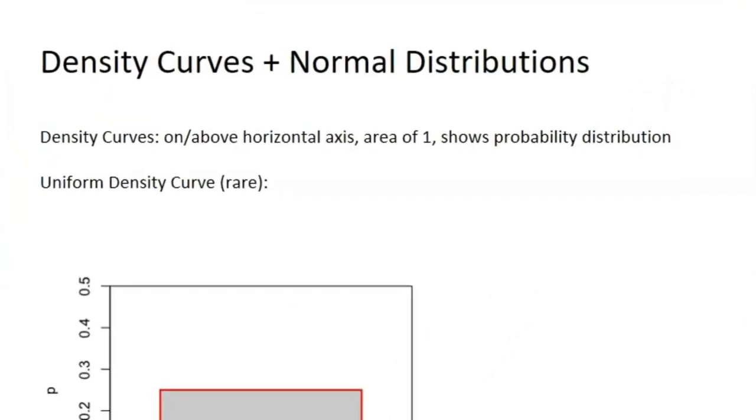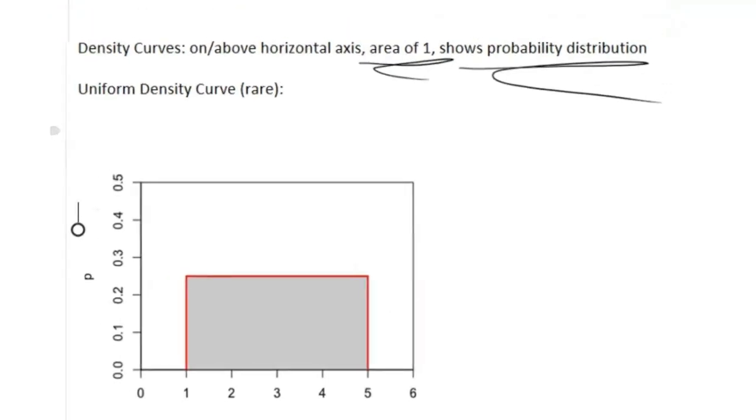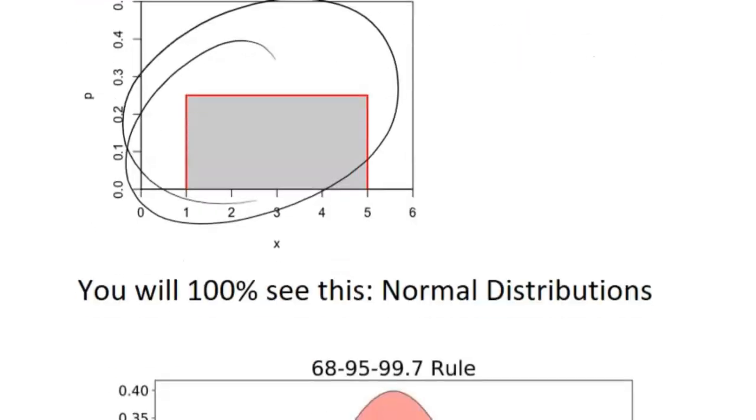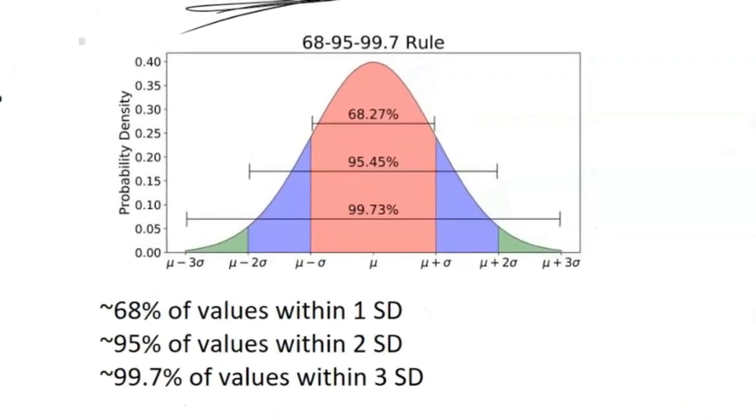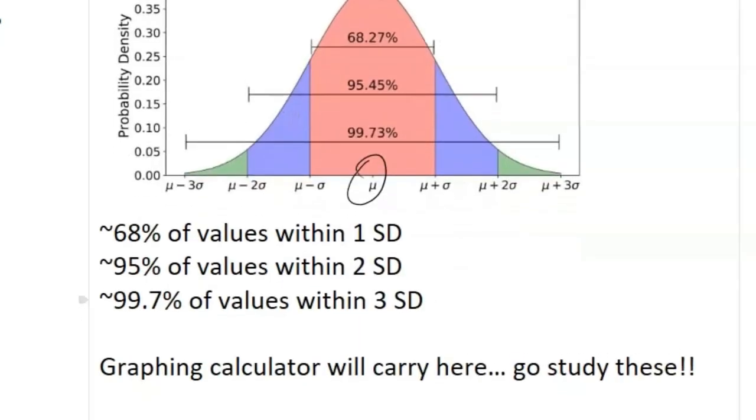Now let's talk about density curves and normal distribution. A density curve is on or above the horizontal axis, has an area of one, and shows probability distribution. Note that a normal distribution is a type of density curve. When you talk about a uniform density curve, it's quite rare - you might see questions on this - but you can see pretty clearly that it has a total area of one. The more common density curve you'll see is the normal distribution. You'll 100% see this. You need to know the standard deviation and the 68, 95, 99.7 rule. 68% of the values are within one standard deviation of the mean, 95% of the values are within two standard deviations of the mean, and 99.7% of the values are within three standard deviations of the mean.